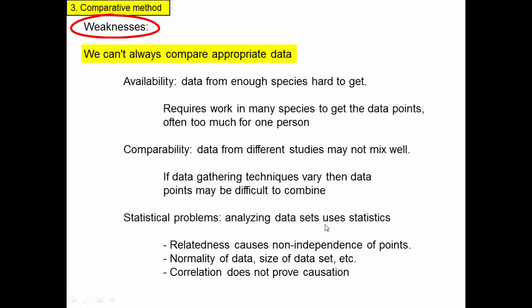Then there are statistical problems. Analyzing these data sets requires more sophisticated statistics. The relatedness of species causes non-independence of data points. There may also be issues with the size of the data set and how many individuals were measured. And at the end of the day, we have to remember that correlation does not prove causation. Although we found a relationship between testes size and mating system, we don't necessarily have proof that was the only difference between those species. Correlation provides support and makes us believe the hypothesis, but it's not proof in the same way experiments are, which isolate factors from every other potential factor.